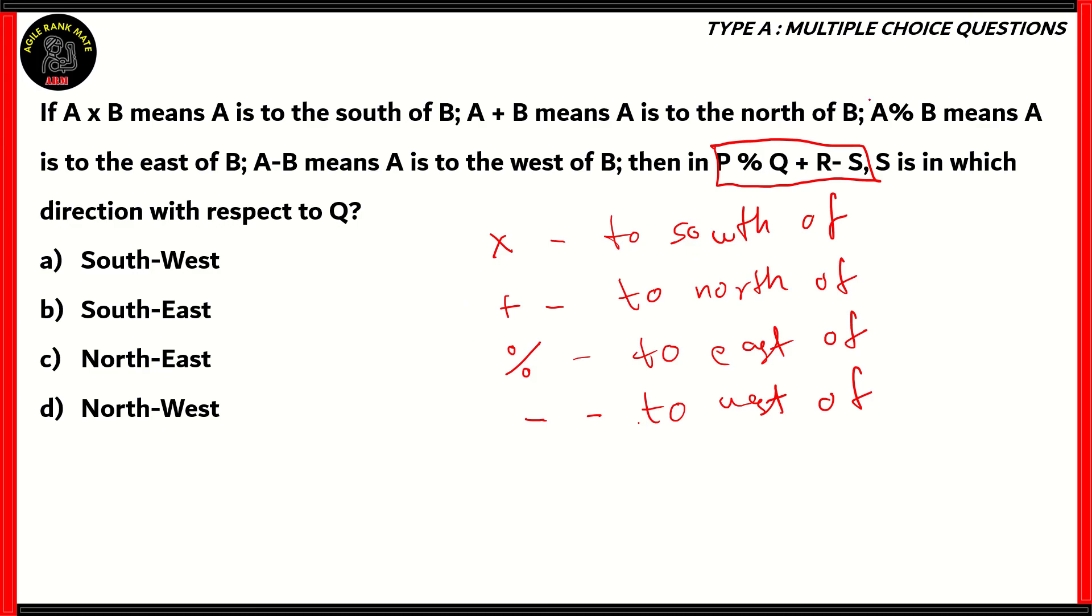So how do we do that? Well, first of all, we'll break it down into three parts. P divided by Q, Q plus R, and R minus S. Now in P divided by Q, you can see that the symbol divided by stands for to east of. So P divided by Q means P is to the east of Q. So when we draw the cardinal directions, north, east, west, south, then you see that when you have Q, P happens to be on its east side.